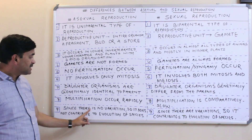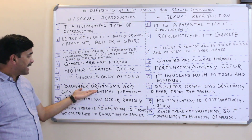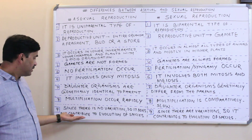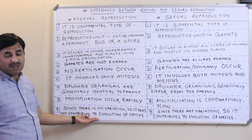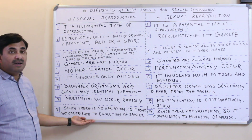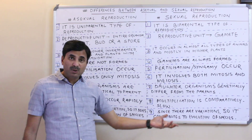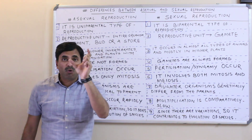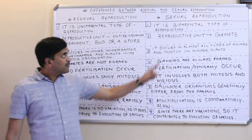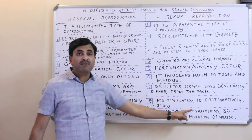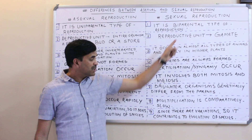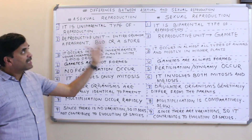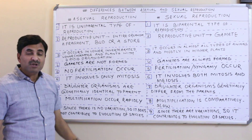Since offspring in asexual reproduction are genetically identical to the parent, no variations are produced, and therefore asexual reproduction does not contribute to the evolution of new species. In sexual reproduction, variations are produced, and because variations play a key role in evolution, sexual reproduction contributes to the evolution of new species.